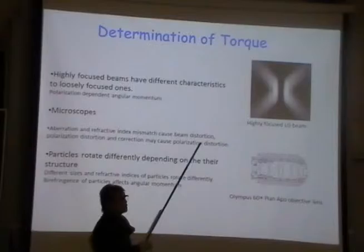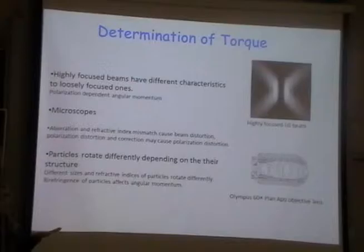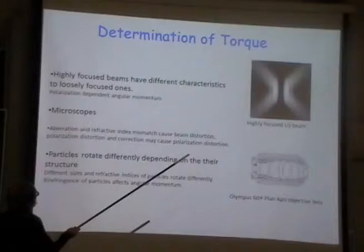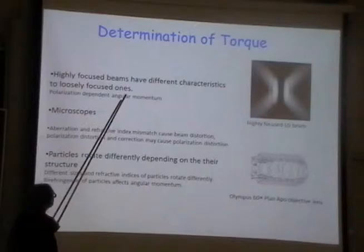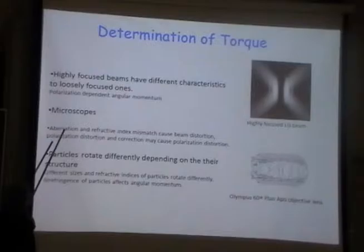We were talking about the paraxial approximation — my lights were going very close to the optical axis. However, if I use highly focused laser beams, they have different characteristics. There are polarisation effects which influence angular momentum, and if I'm in the microscope — where all optical tweezers work — I will also have aberrations.